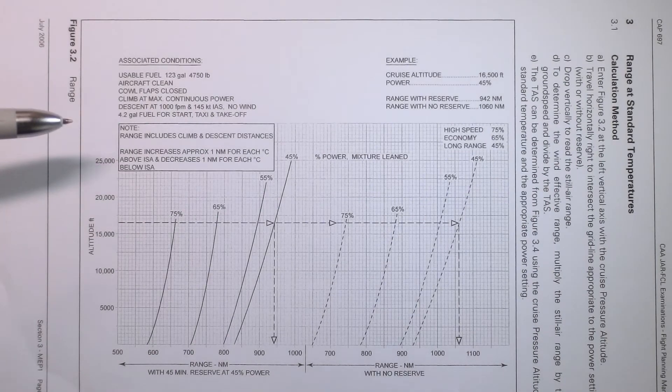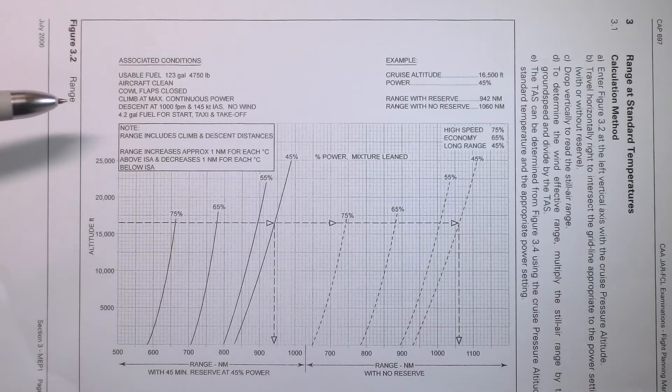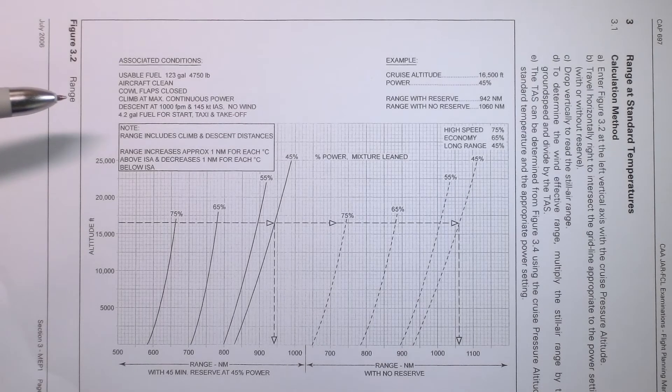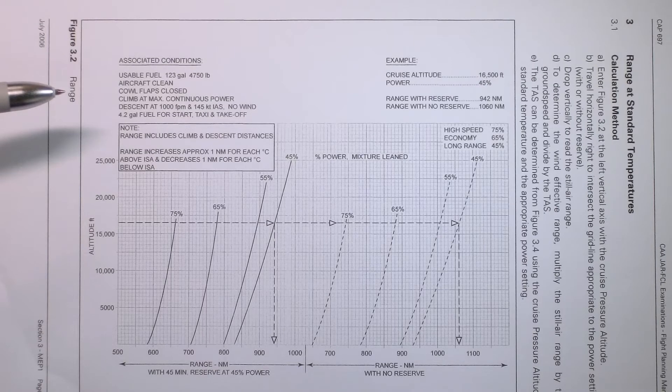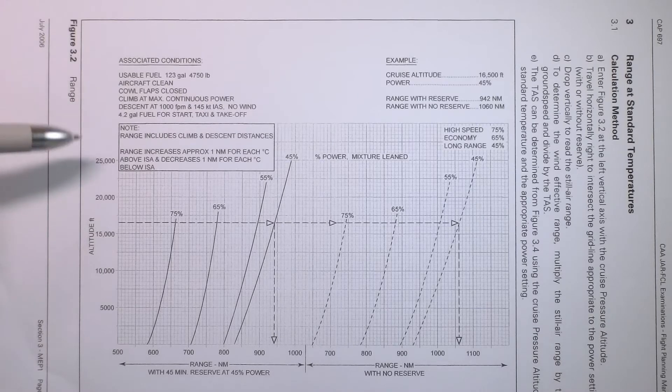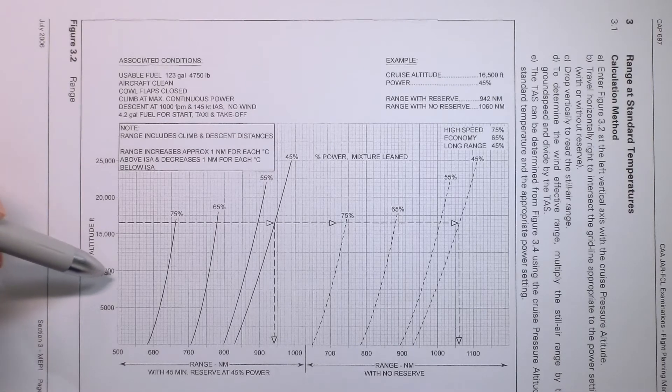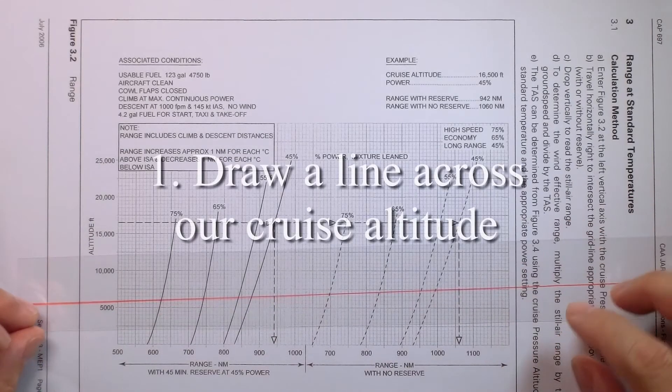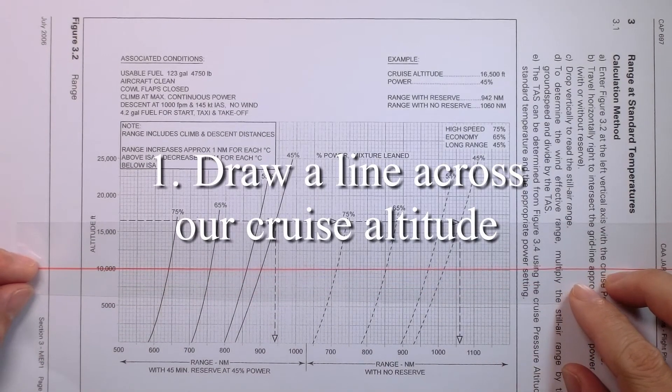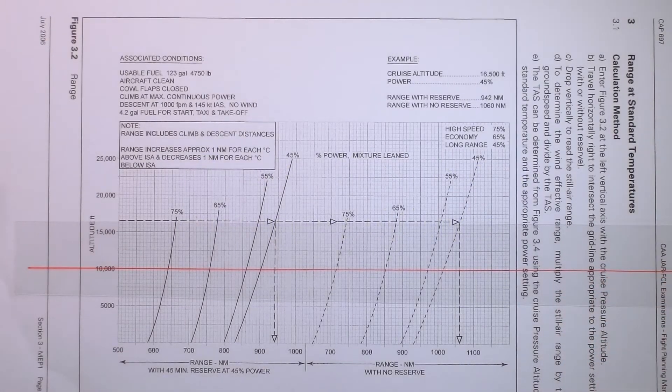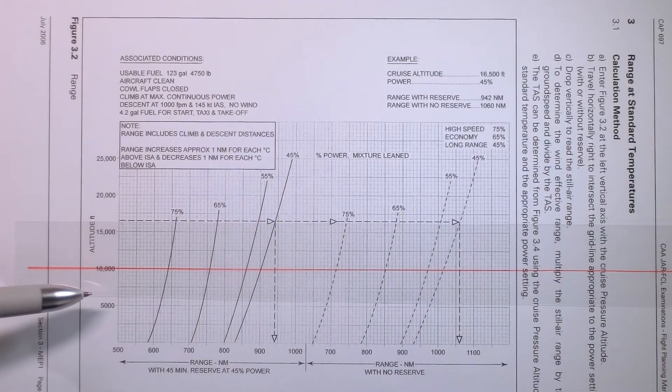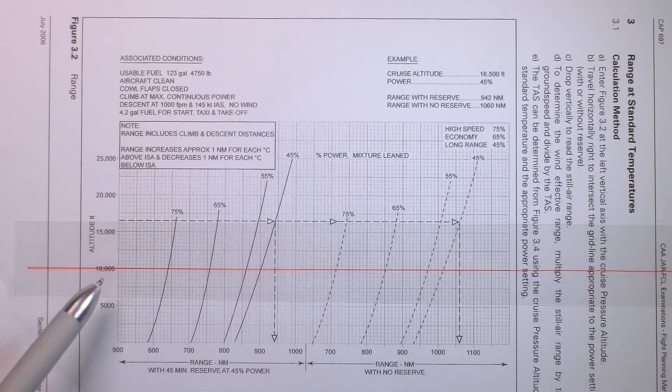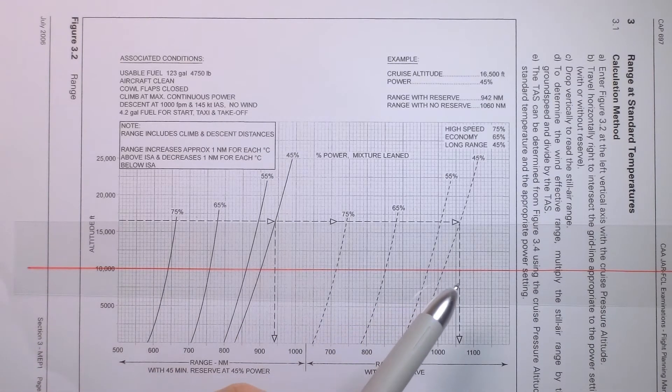In our example, we are going to assume that our multi-engine piston aeroplane will cruise at 10,000 feet with a power setting of 55%. So the first step we do is we're going to mark out a guideline for 10,000 feet. And that would look something like this. So we've got a line drawn across the entire chart for 10,000 feet.